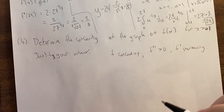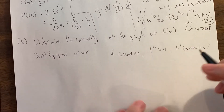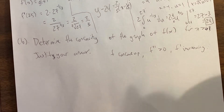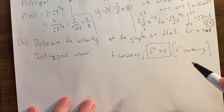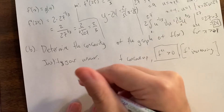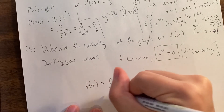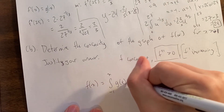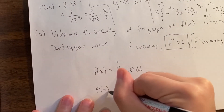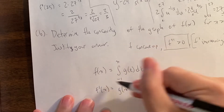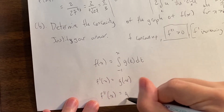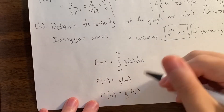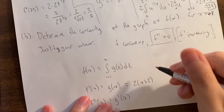We also use 'f has an inflection point when f prime goes from increasing to decreasing or decreasing to increasing' on graph response questions. But in this case, we are going to take two derivatives. So let's rewrite: f(x) equals the integral from -1 to x of g(t) dt. Taking a derivative immediately: f prime of x equals g of x, since derivatives of integrals cancel each other out. Then f double prime of x equals g prime of x. So all we need to do is take one derivative of g.